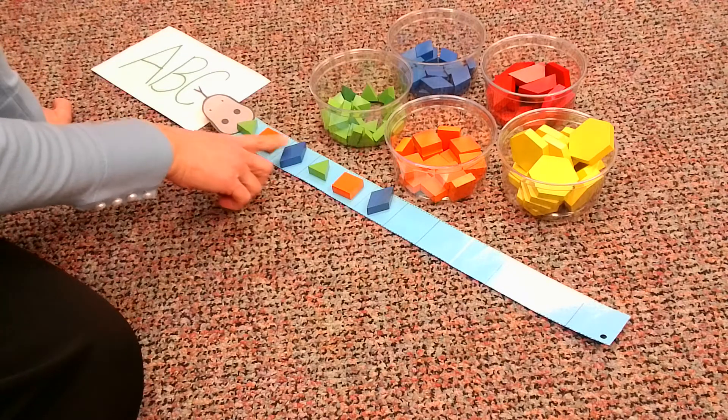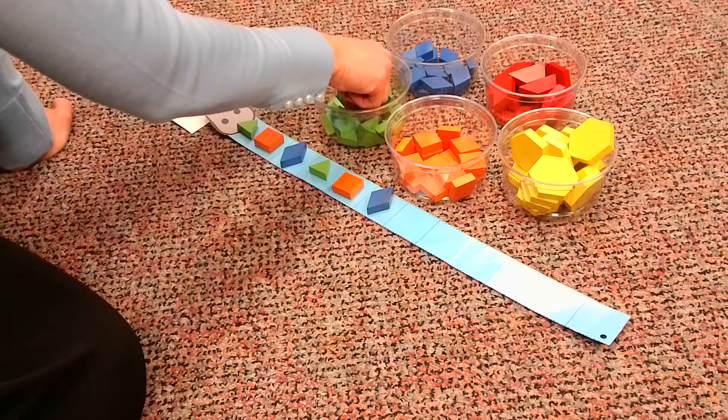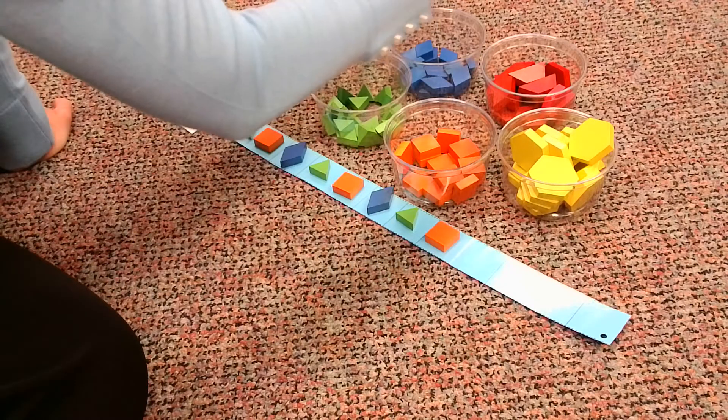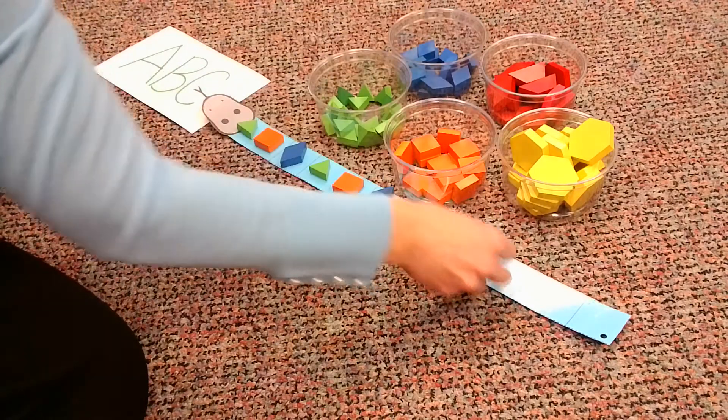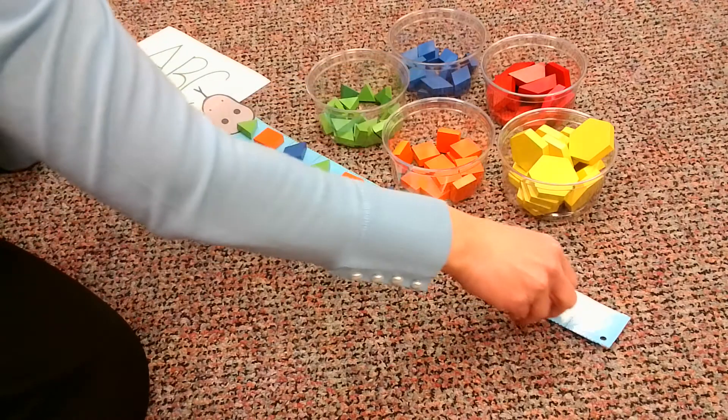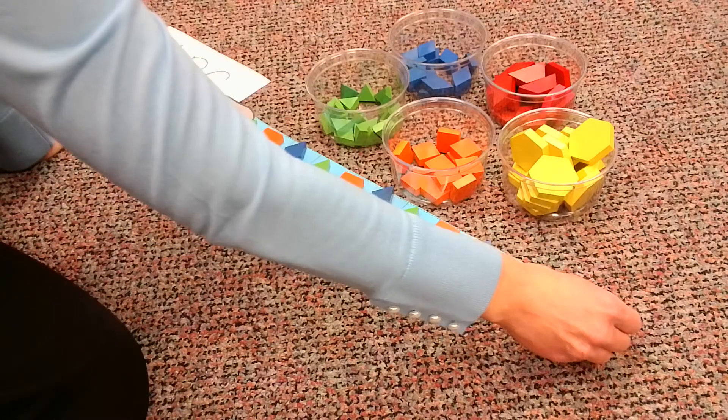A, B, C. A, B, C. Triangle, square, rhombus. Triangle, square, rhombus.